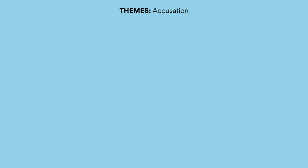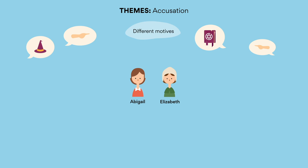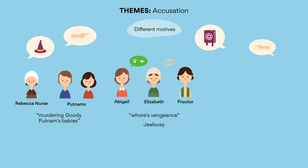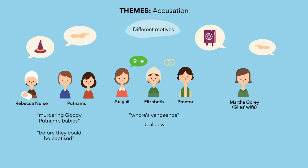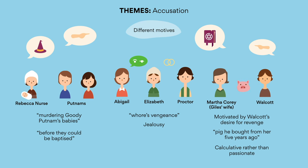Accusation. The events of the Salem witch trials detail various types of accusation. Although all are disguised as the dispelling of witchcraft, the false accusations depicted in the play are carried out with a range of different motives. For example, Abigail's accusation of Elizabeth as a witch is described to derive from a whore's vengeance, due to her passionate jealousy of Elizabeth's position as Proctor's wife and Abigail's wish to take her place. Similarly, Rebecca Nurse's charge of murdering Goody Putnam's babies is due to Putnam's resentment and jealousy of her numerous children while they themselves lost babies before baptism. In contrast, the accusation of Martha Corey — Giles's wife — of witchcraft is motivated by Wolcott's desire for revenge, as he resents her for an unhealthy pig he bought from her five years ago. Thus, his actions are calculative rather than passionate — a cruel attempt to get his money back.